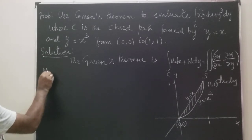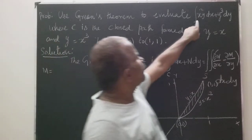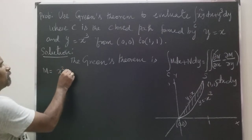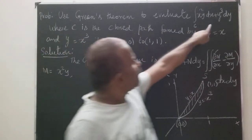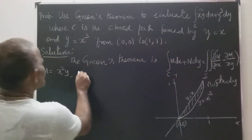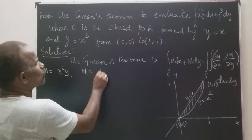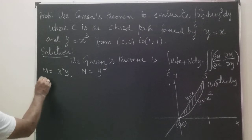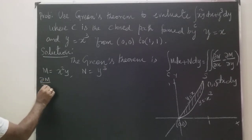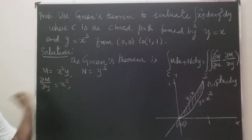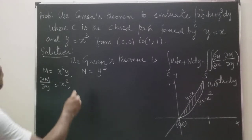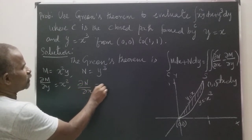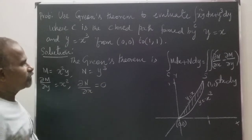Now, what is M? M equals x squared y. What is N? N equals y cubed. So ∂M/∂y equals x squared, and ∂N/∂x equals 0.